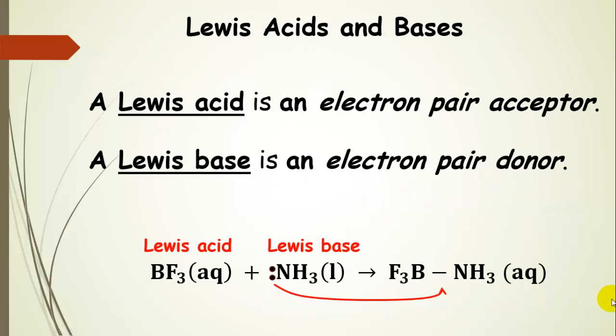A Lewis acid is an electron pair acceptor. It's going to accept an electron pair from a Lewis base, which is an electron pair donor. Here's an example: a Lewis acid accepts an electron pair from a Lewis base. This is not a definition we're going to spend a lot of time with.